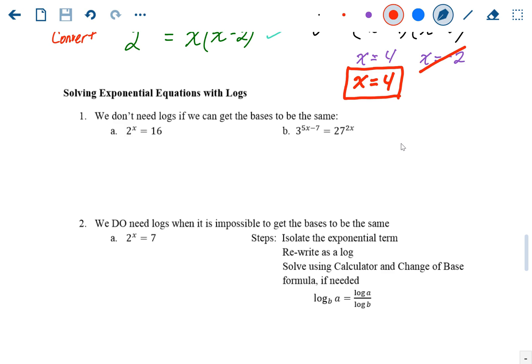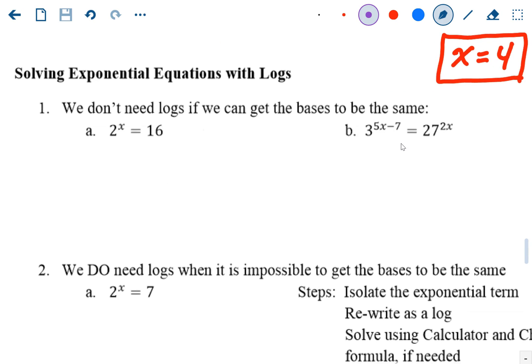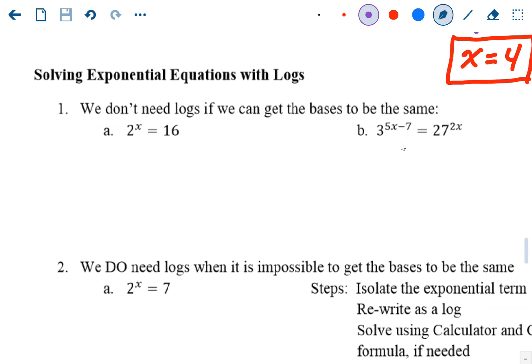So for example, this first one - and again, we did these a couple weeks ago - 2 to the x power equals 16. Well, the property of equality for exponential functions is kind of similar to logarithms. The bases have to be the same, so we're going to rewrite 16. Instead of writing 16, we're going to say it's 2 to the fourth power.